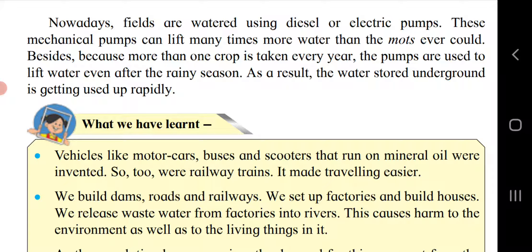Nowadays fields are watered using diesel or electric pumps, which can lift many times more water than the moat ever could. Because more than one crop is taken every year, pumps are used to lift water even after the rainy season. As a result, the water stored underground is getting used up rapidly, and as development takes place we are becoming overburdened on the environment.